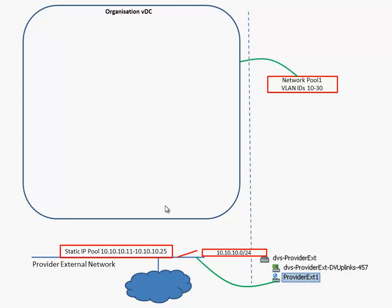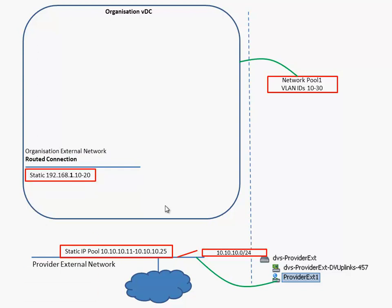Let's take a look at this pool. The pool is going to be used to create an organization network, and once it's a routed connection it can be configured with a static address — in this case 192.168.1.10 to .20. A vShield Edge device is automatically deployed. Every vCenter needs to have access to a vShield Edge device, and once somebody creates a vApp network or a routed organization network, a vShield Edge device will be automatically deployed.